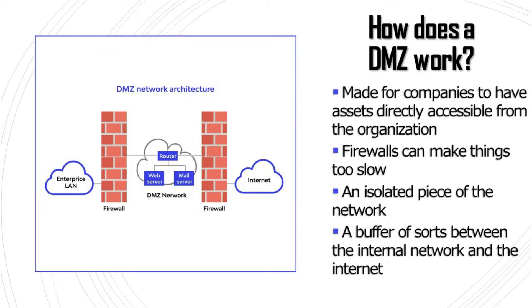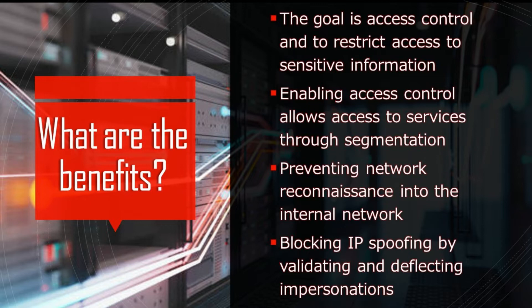How does a DMZ work? A business might have a web server that's accessible from the internet. One way to protect it is to host the server on a firewall, but that may make performance subpar. What's better is to isolate the section of the network that's easily accessible from the internet. The DMZ is a buffer of sorts, and there's still a firewall between the internal network and the DMZ. When implementing a DMZ in a network, the goal is access control. DMZs restrict access to sensitive information and servers. Even though outside users can access the network, there's still a buffer in between.